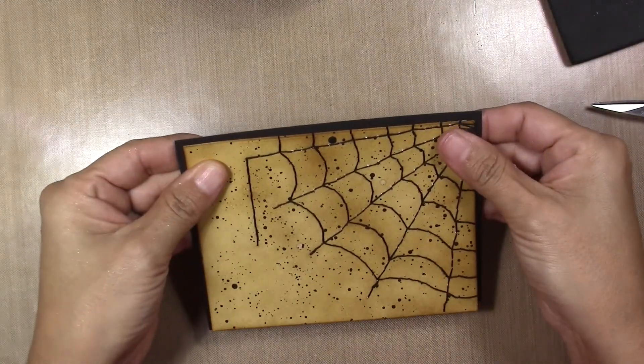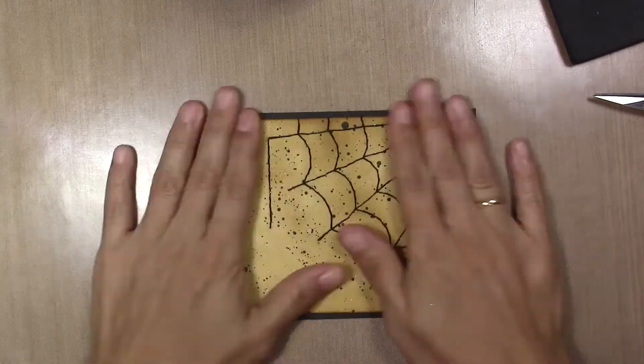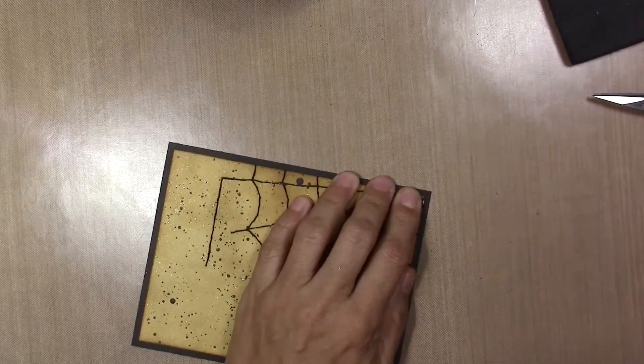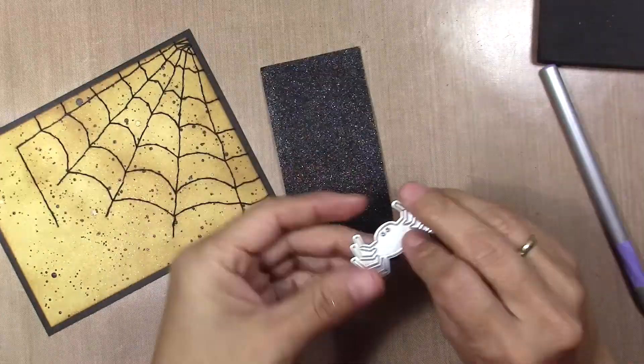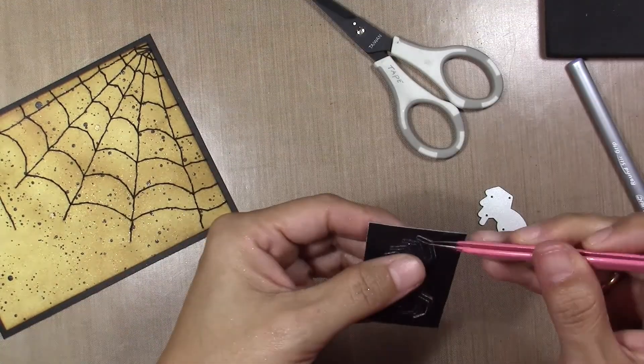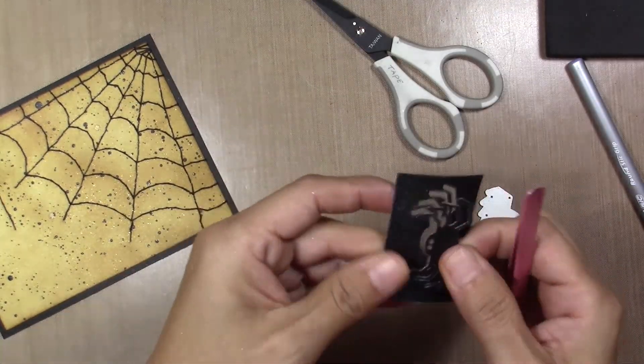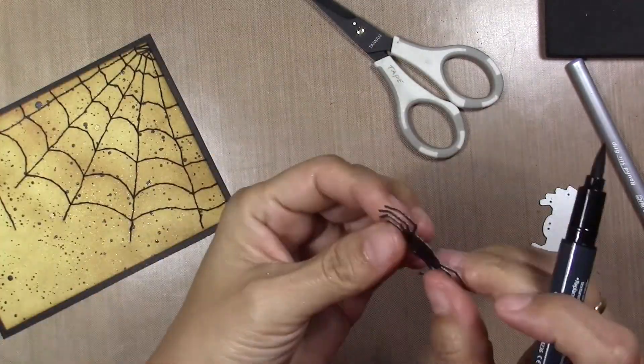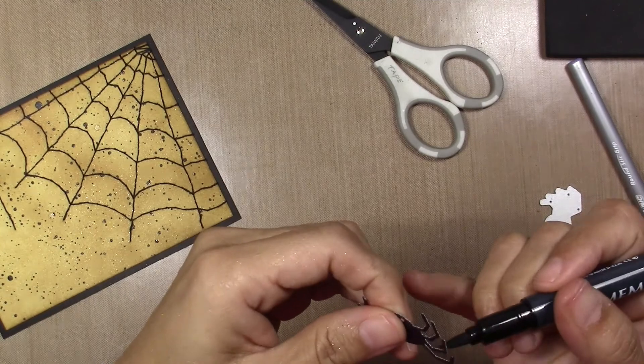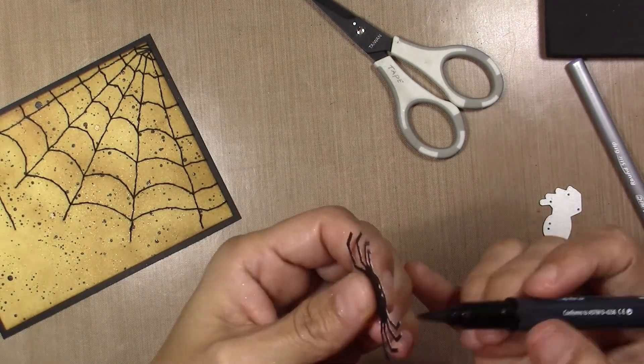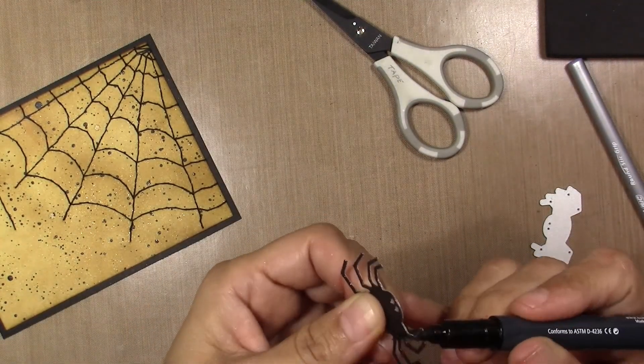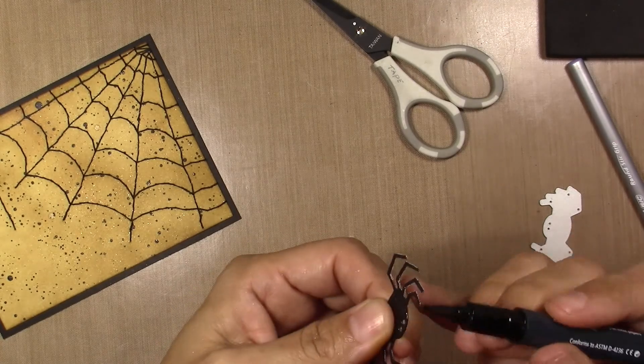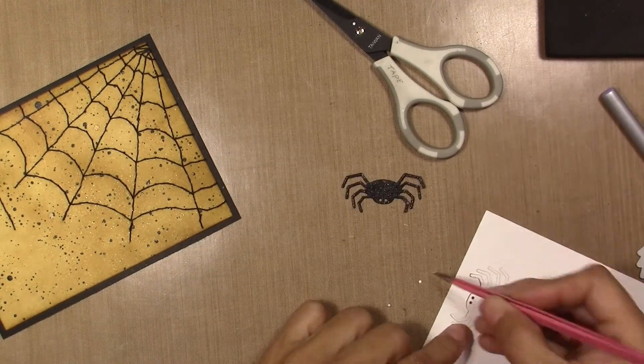Then I glue my card panel in a black cardstock, and I'm going to cut this spider in a glitter black cardstock. Because this is a white core paper, it's white on the sides, I'm going to use my Memento marker to make it look more finished, better.